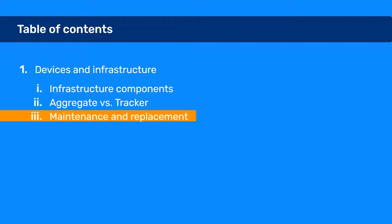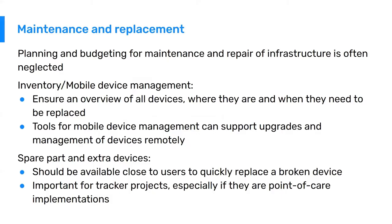Lastly, I will talk about maintenance and replacement. This is often neglected but is a very crucial part of a sustainable DHIS2 implementation over time. Budgets are often available to purchase infrastructure at the start of a project, but as the project moves on over several years, devices break, need repair, become obsolete, or sometimes disappear. It is very important that the country has a good plan on how to replace and repair devices quickly. Having an inventory or mobile device management system is a good way to do this — it ensures an overview of all devices, where they are, and when they need to be replaced. Mobile device management tools can also support upgrades and management of devices remotely, so you can install new things or upgrade to new versions without people physically bringing their device to a central location.